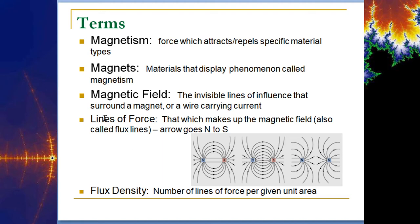The magnetic field consists of invisible lines of influence. We're going to talk about this in terms of current-carrying wires, using the right-hand rule to show where those invisible lines of influence surround it. We also need to talk about the lines of force — that which makes up the magnetic field, the flux lines. The arrows always go from north to south, no matter where you're talking about.